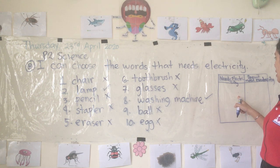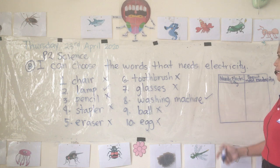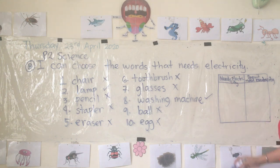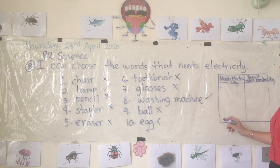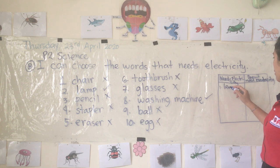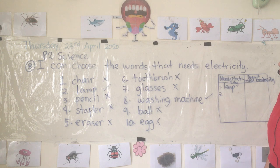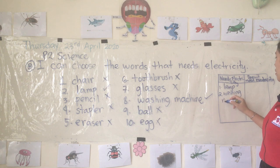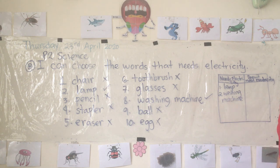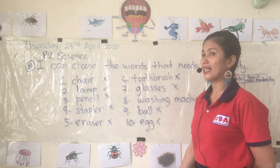So we are going to write the things that need electricity. Number one is lamp, and number two is washing machine.